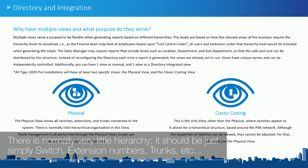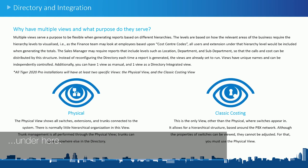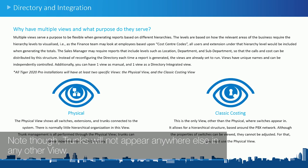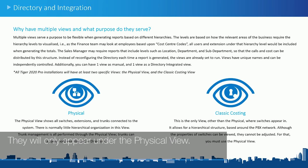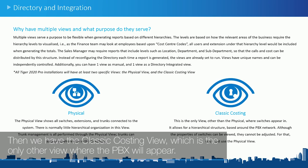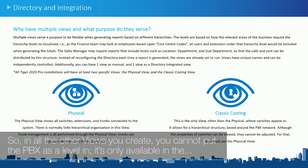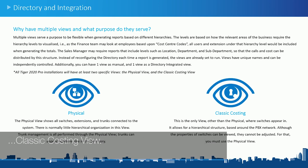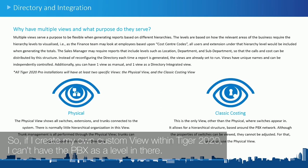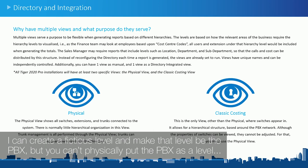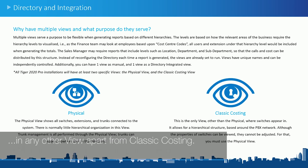The physical extensions are those that have been learned, along with trunks connected to the system. There is normally very little hierarchy — just switch, extension numbers, trunks, etc. Note that trunks will not appear anywhere else in any other view; they will only appear under the physical view. Then we have the classic costing view, which is the only other view where the PBX will appear. In all other views you create, you cannot put the PBX as a level. It's only available in the classic costing view.